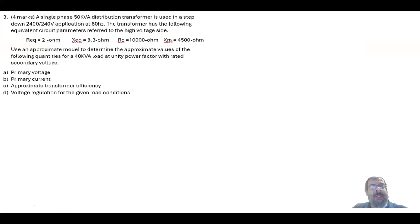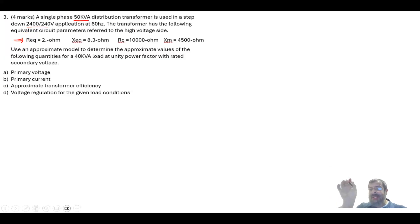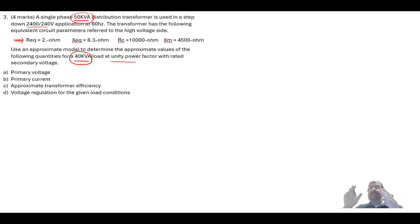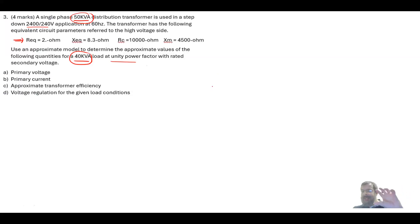This question describes a single-phase transformer — rated as a step-up going from 2400 volts to 240 volts. The transformer's equivalent approximate circuit lumps the primary and secondary resistance and inductance together. We need to use this model to calculate certain values at load conditions of 40 kVA at unity power factor. Note the difference: the rated transformer value is 50 kVA, but this question asks us to calculate at a different condition.